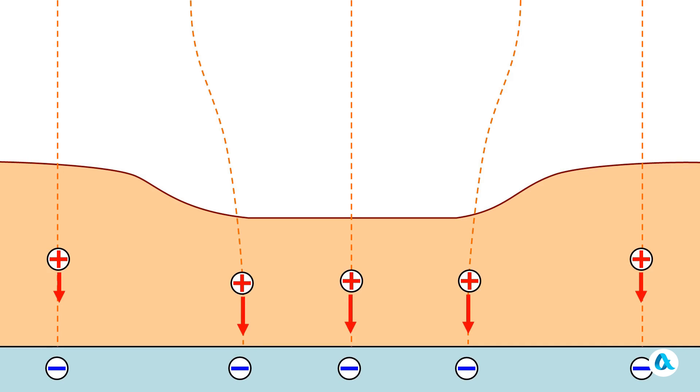However, two forces oppose this growth. First, there is the force of hydrostatic pressure, which tries to push the pit back out. Second, there is the force of surface tension, which also works to smooth out the surface. For the pit to keep growing, the electric forces must outweigh these.